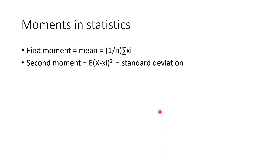There was also a question on moments from a previous week. I'll contact the course coordinator regarding that question. In statistics: the first moment is the mean of a random variable, the second moment is the standard deviation, the third moment is skewness, and the fourth moment is kurtosis. We can discuss these in more detail when we encounter them in the course.